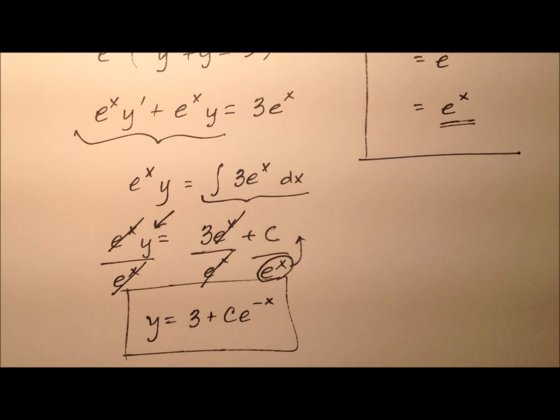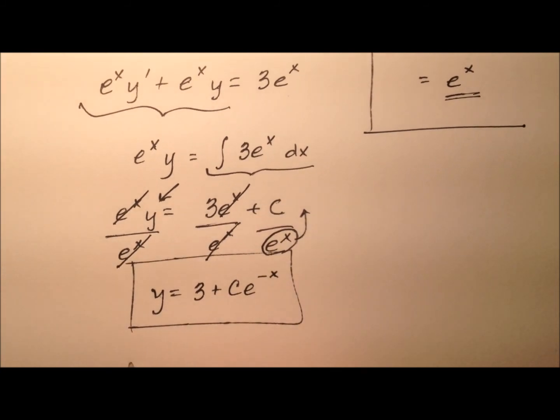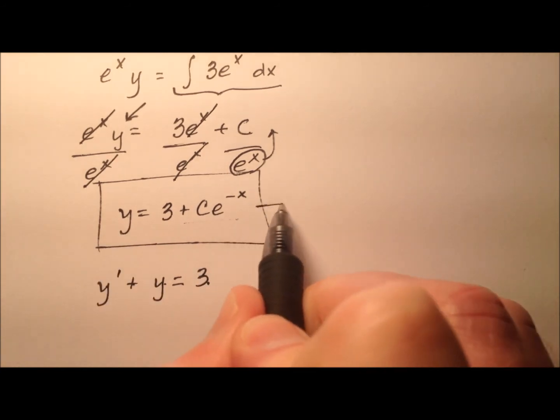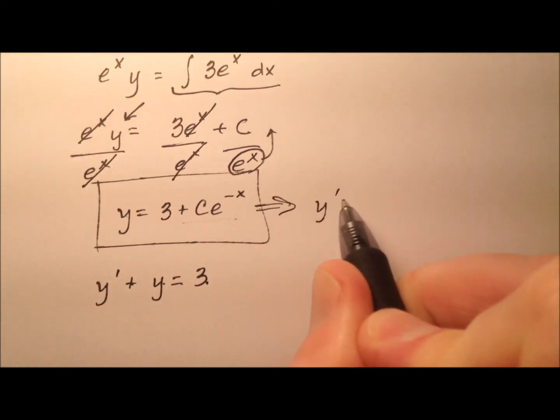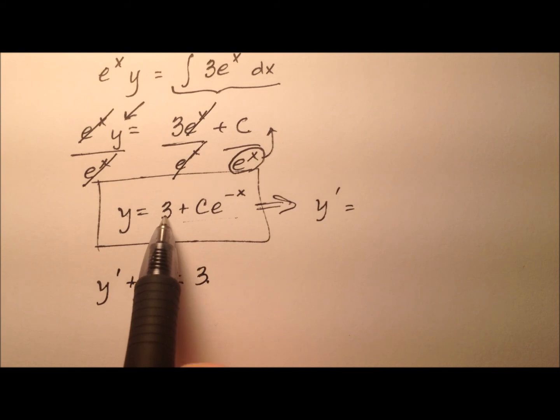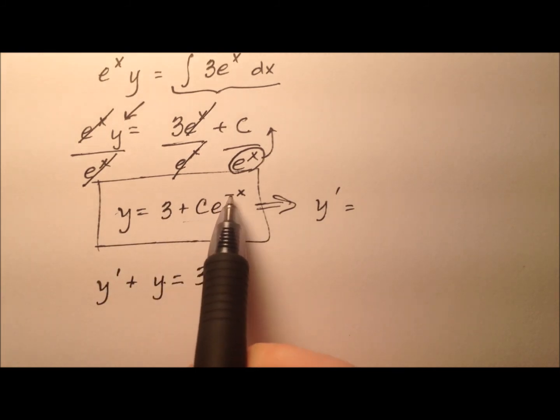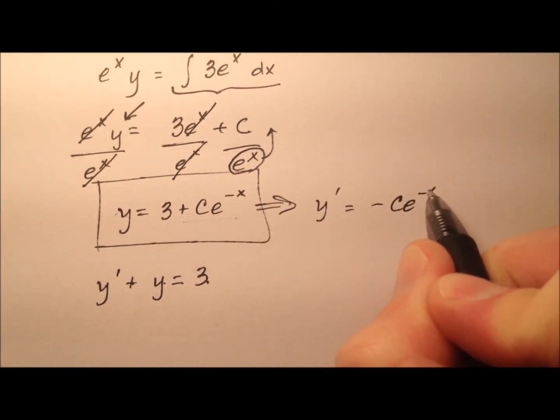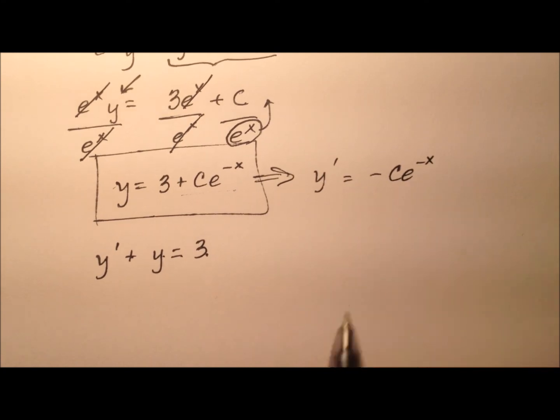We can verify that this solution works by plugging it back into our original differential equation. y prime plus y should equal 3. Here's y. But we also need to find y prime. When we differentiate both sides the constant 3 goes away, and the ce to the negative x will become negative ce to the negative x using the chain rule.